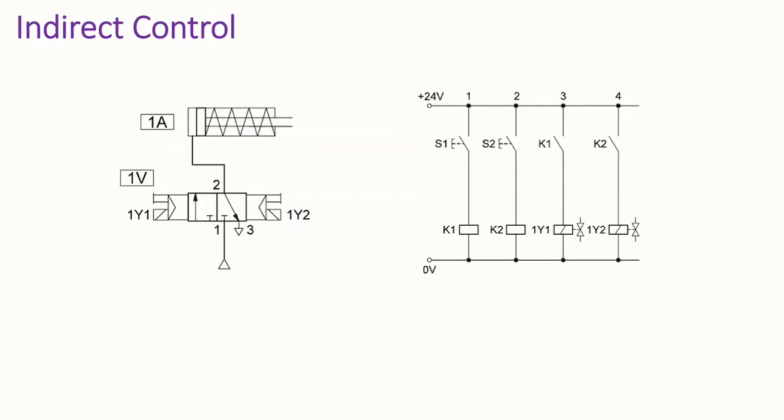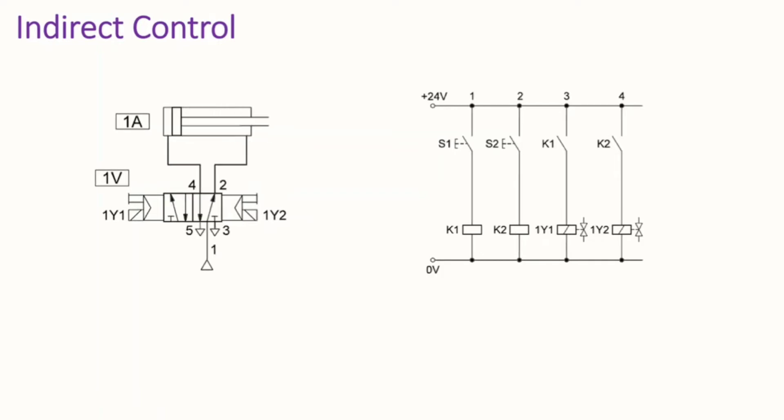Now let's look at another case — this time with a double-acting cylinder. Whatever we have inside the electrical circuit is going to be the same; the only difference is the directional control valve. Instead of having a 3/2 valve as in the previous example, here we have a 5/2 valve.